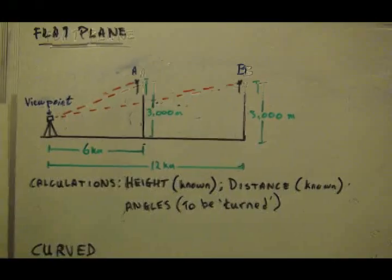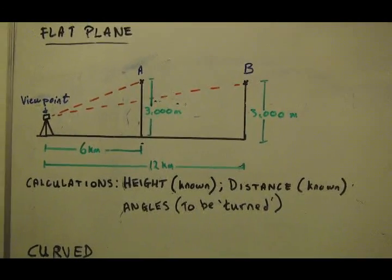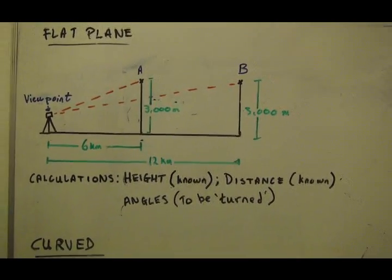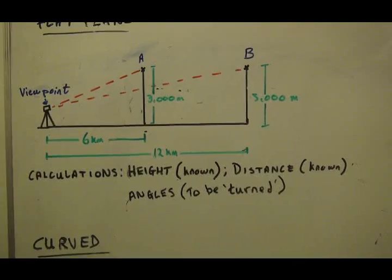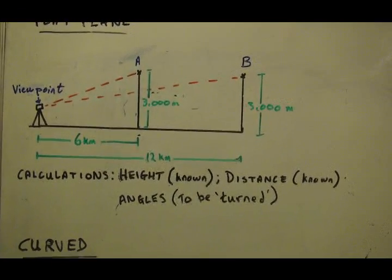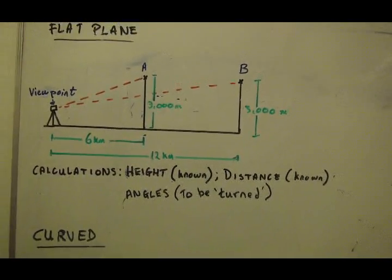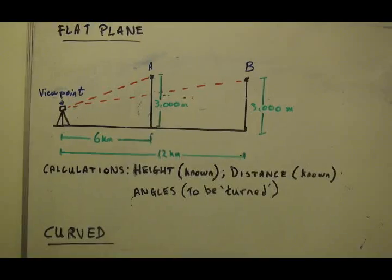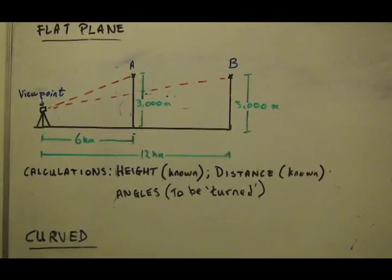So here we go. Let's have a look at how the figures are going to possibly pan out. Here we have the usual thing where we've got the viewpoint on the left and he's going to be measuring the angle to mountain A and mountain B. Let's assume mountain A is six kilometres away and mountain B is 12 kilometres away and they are both the same height. Based on that, the extra distance creates less of an angle from the viewer to get to that high point.